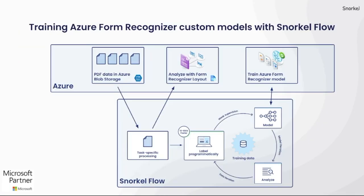Taking a look at the overall workflow again, we have SnorkelFlow running on Azure Kubernetes Service, though it could be on any Kubernetes cluster and any cloud. Our data is stored in Azure Blob Storage as individual PDF documents. Using our template workflow, SnorkelFlow will orchestrate the ingestion and preprocessing of those documents using the Form Recognizer layout model to identify words, tables, lines, and other structures of interest within the document itself. That's represented by this first stage here.